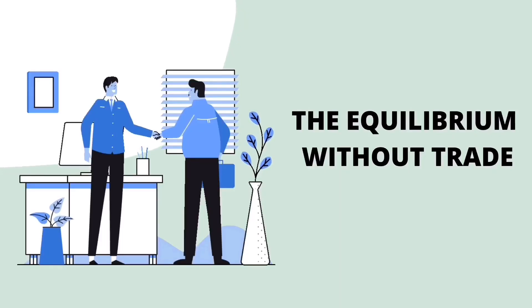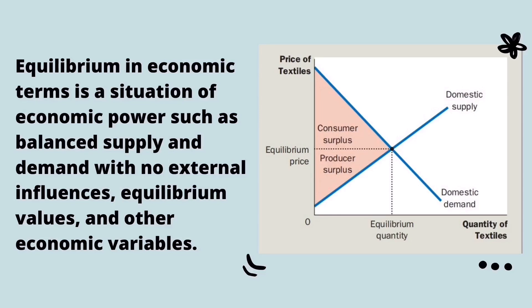The equilibrium without trade: imagine the isolated textile market is isolated from the rest of the world by government decree. No one is allowed to import or export textiles, and the penalty for violating the decree is so large that no one dares to try. Because there is no international trade, the market for textiles consists solely of domestic buyers and sellers.